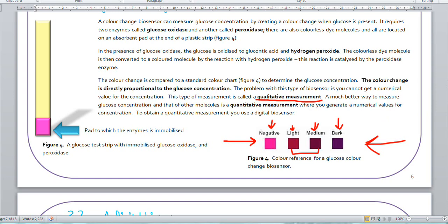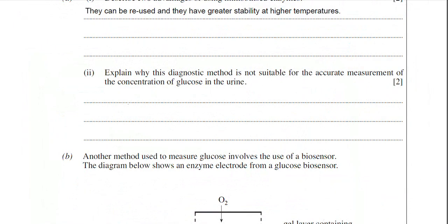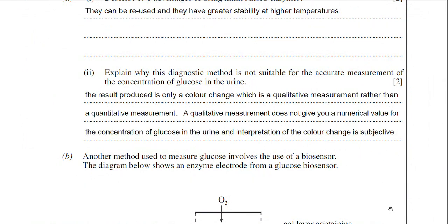What you want is a quantitative measurement — that's the best way to measure things in science, but you cannot do that with these strips. My answer is: the result produced is only a colour change, which is a qualitative measurement rather than a quantitative measurement. Make sure you get those terms the right way round. A qualitative measurement does not give you a numerical value for the concentration of glucose in the urine, and interpretation of the colour change is subjective — it's very much up to the individual.